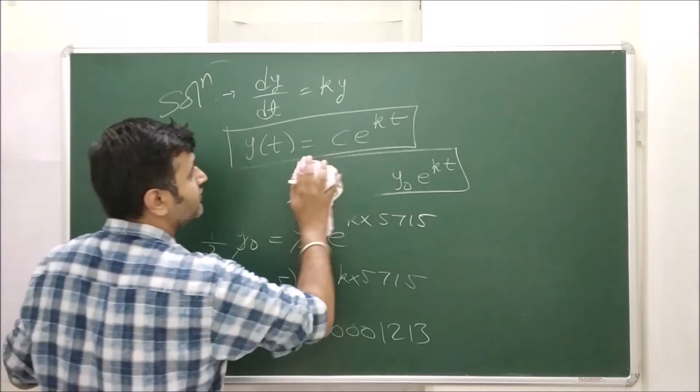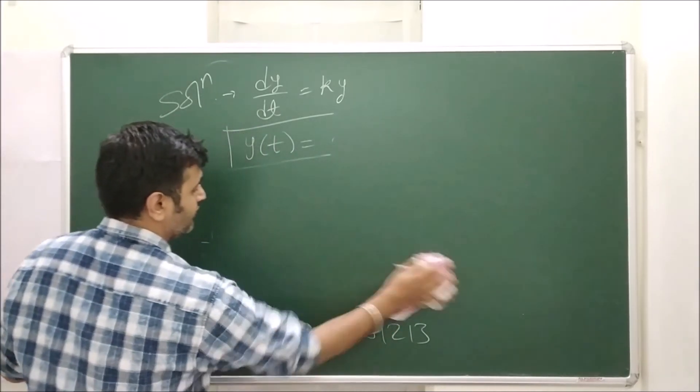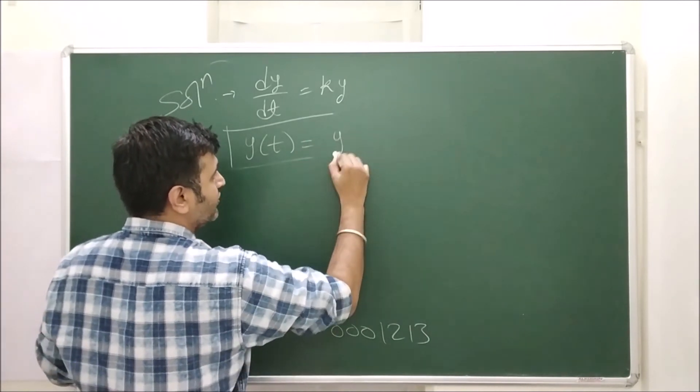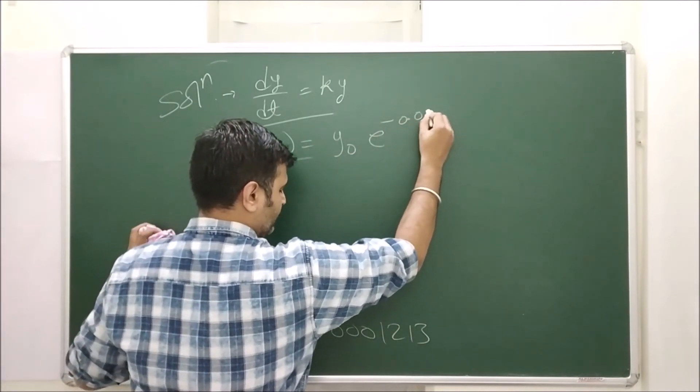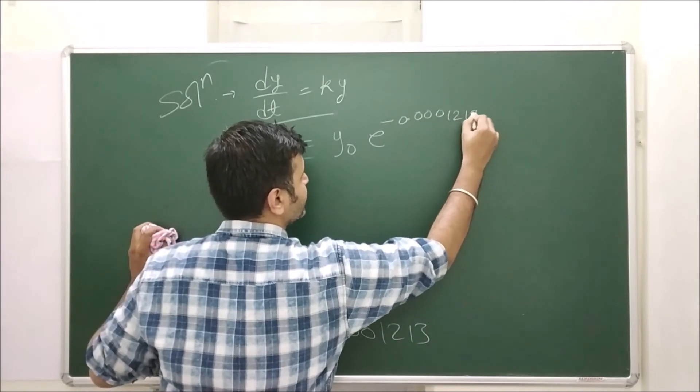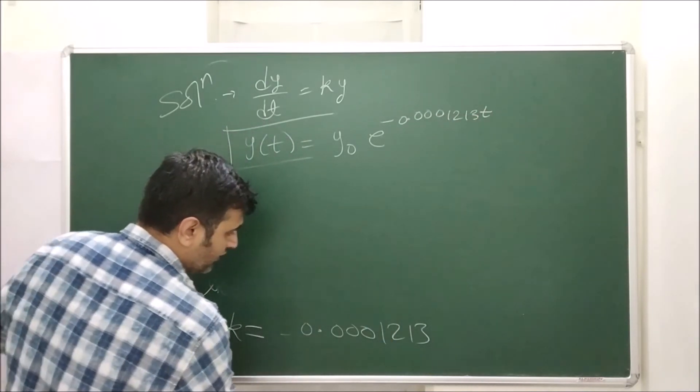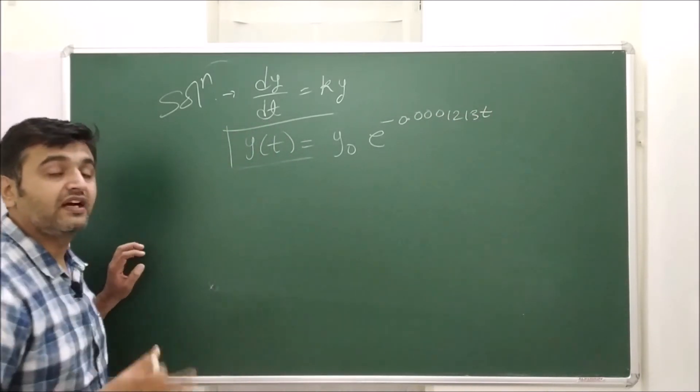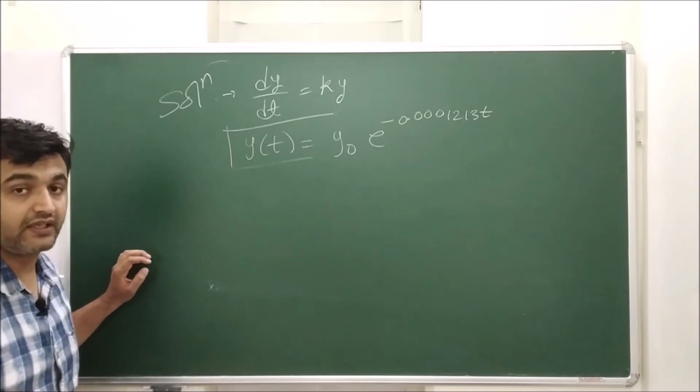Therefore if you put this value, this is y0 e^(-0.0001213t). So using half-life, we found the value of k.